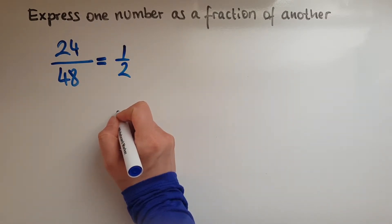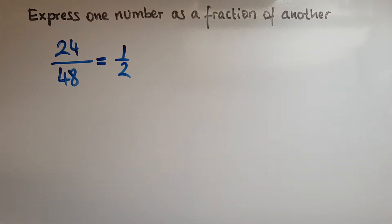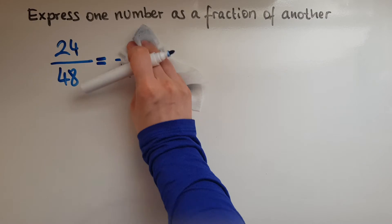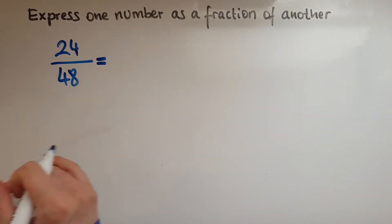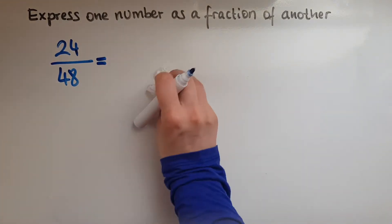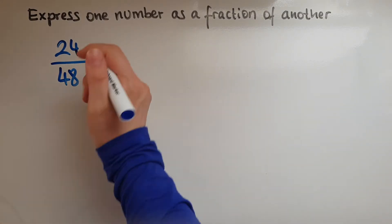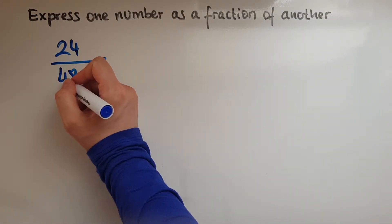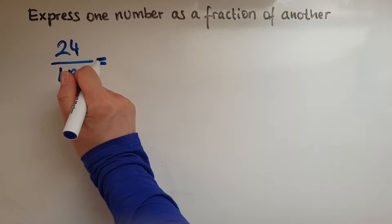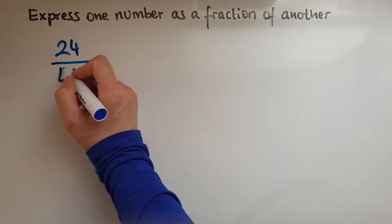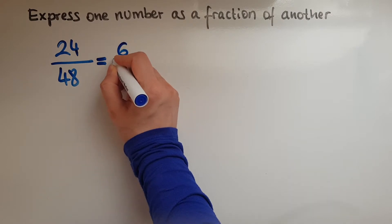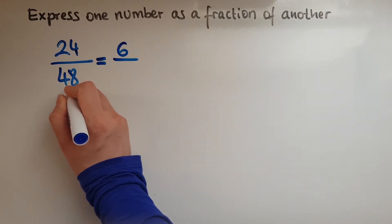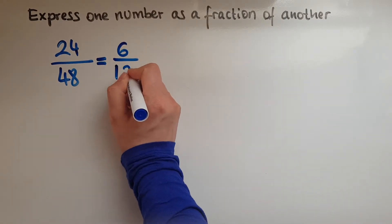But some people prefer to go the long way, and if they can't spot it immediately, they would perhaps divide this by 2, because both of them can be divided by 2, or by 4. So if I divide this by 4, we're going to have 6, and if I divide this by 4, we're going to have 12.